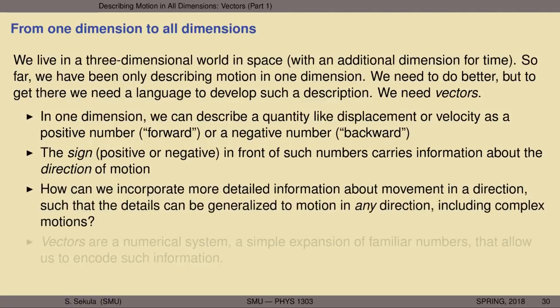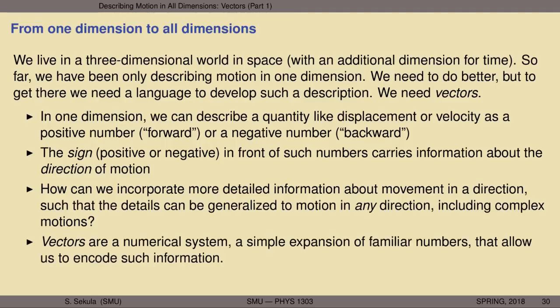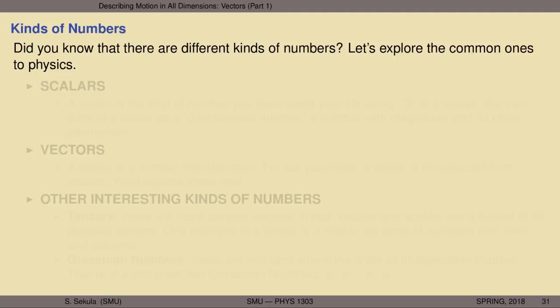But how can we incorporate more detailed information about movement in a specific direction — one that may not lie only along one coordinate axis? We want to generalize the description of motion — displacement in space, velocity, or changes in velocity (acceleration) — in any direction in three-dimensional space. This can include quite complex motions. The way we're going to do that is to use a kind of number called a vector. Vectors are a numerical system, a simple expansion of already familiar numbers, and they allow us to encode information about both length and direction.